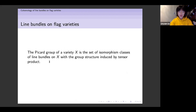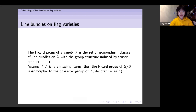Let me recall that whenever we have an algebraic variety, we can define the Picard group on it, which is the set of isomorphism classes of line bundles on X. The group structure is induced by tensor product. For the flag variety, we know what the Picard group looks like. If T is a maximal torus contained in the Borel, then the Picard group of G/B is isomorphic to the character group of T, denoted X(T).